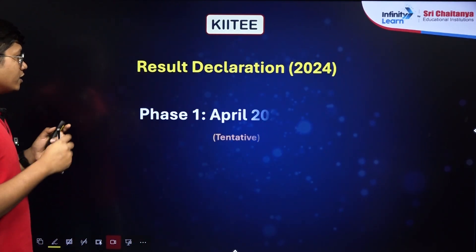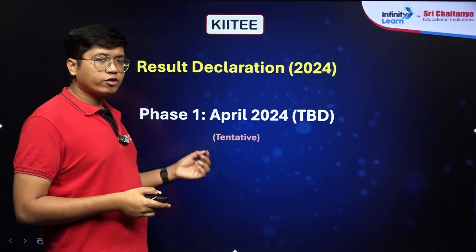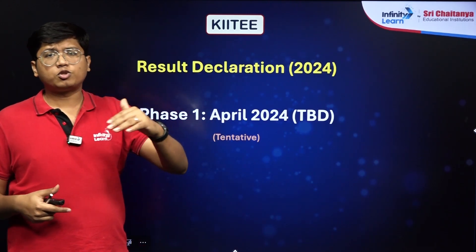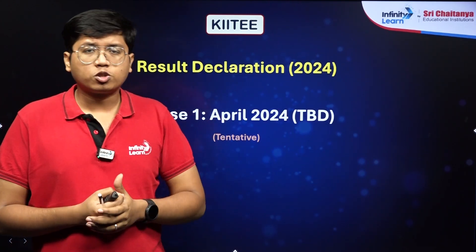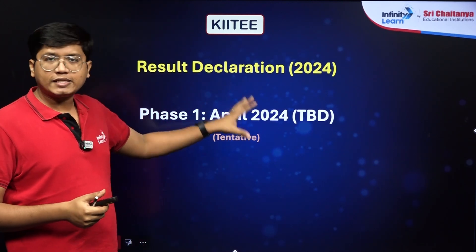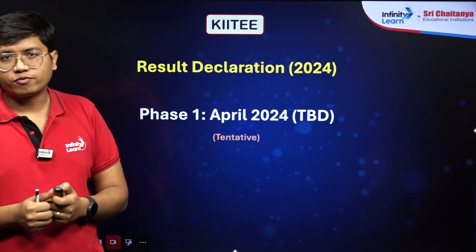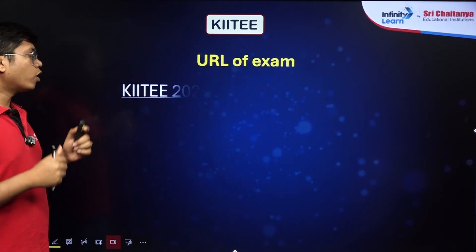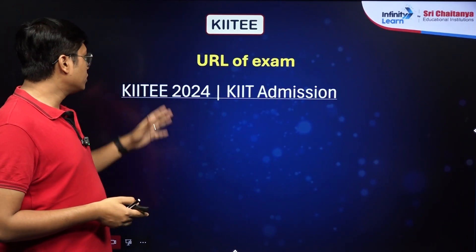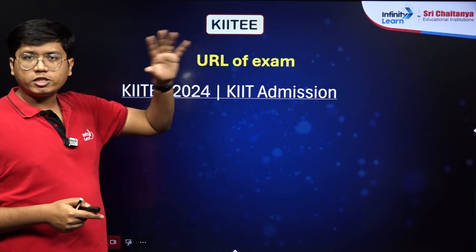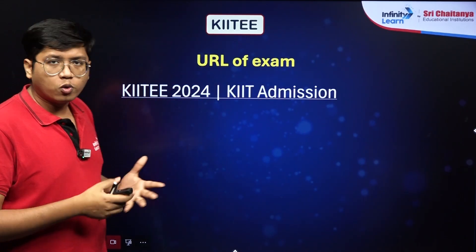The result declaration dates are not yet confirmed. Tentatively, the phase one result will be declared sometime in April 2024. Tentative dates for phase two and phase three have not been provided yet. For more details, visit the official site at KIIT 2024 slash KIIT admission.